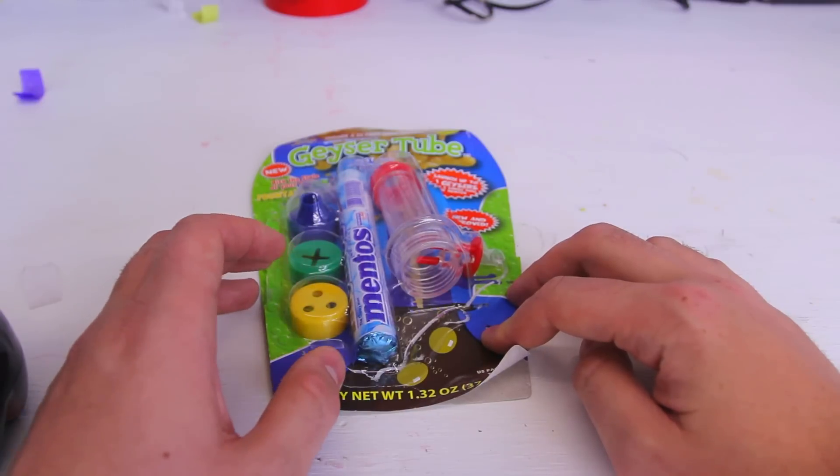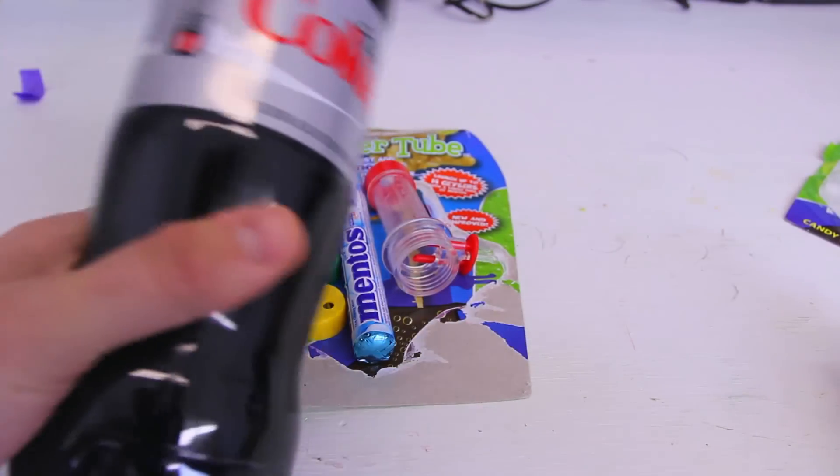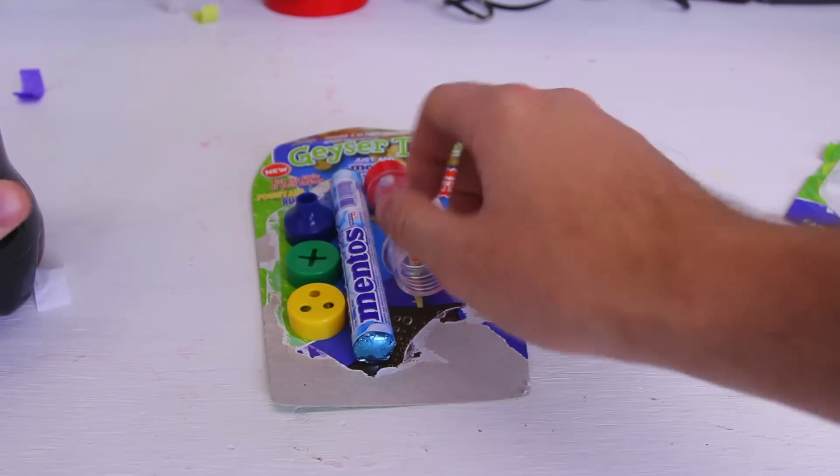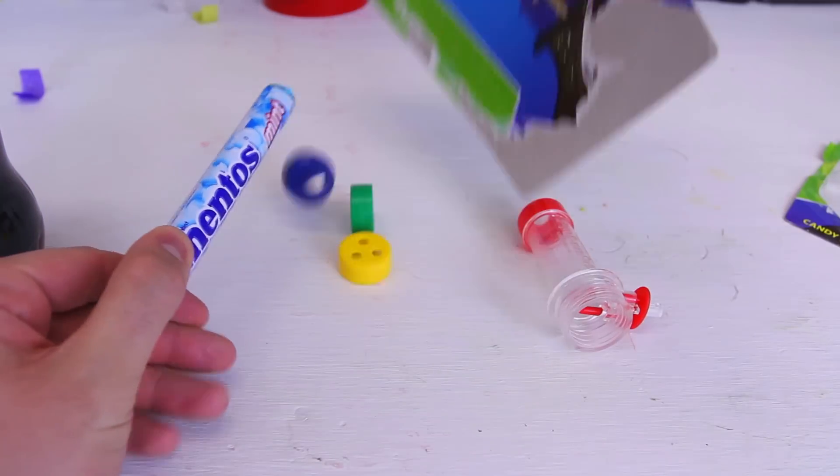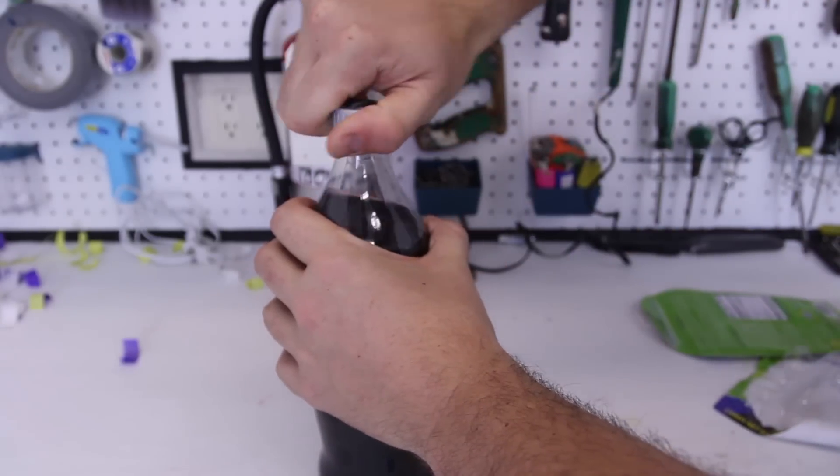What's up guys, today I'm gonna review a very cool science kit with mentos and Coke. You'll have to buy diet Coke, and what it comes with is mentos and a tube. That's actually a pretty cool kit.